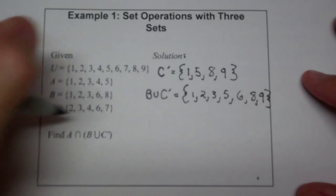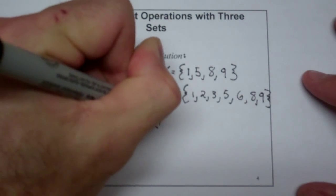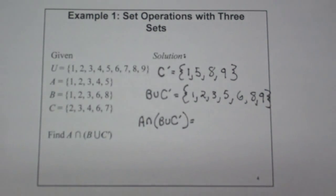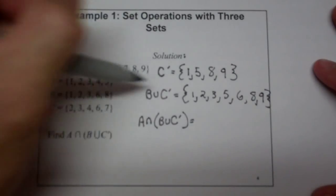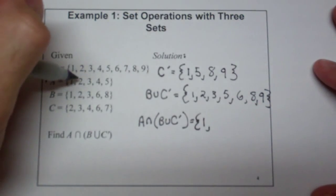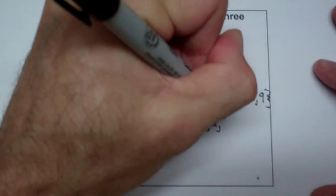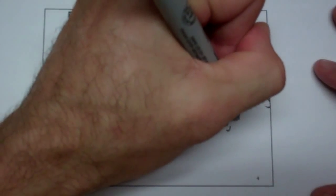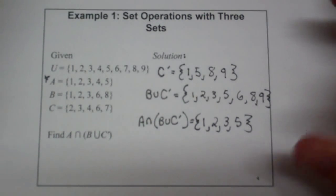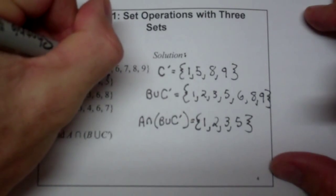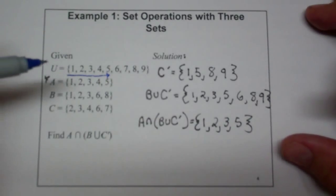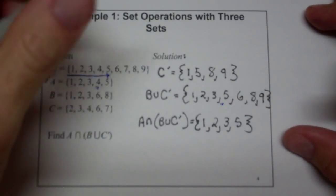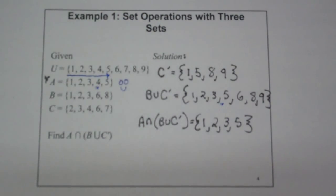Now we're going to intersect that with A. So now we have A intersect B union C complement, and we're looking for a smaller set — elements that are only in both sets. So 1 is in both, 2 is in both, 3 is in both, 4 is not, 5 is in both, and now I'm done. I went left to right along A because it was the smaller set, and if the element is over in the other set, I write it down. If not, I skip over it. So 4 was in A but not in B union C complement, so it doesn't appear in the intersection.